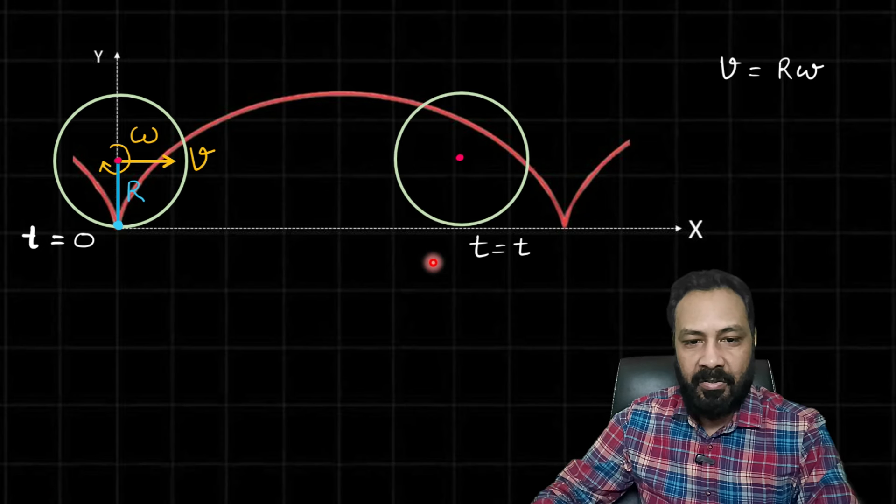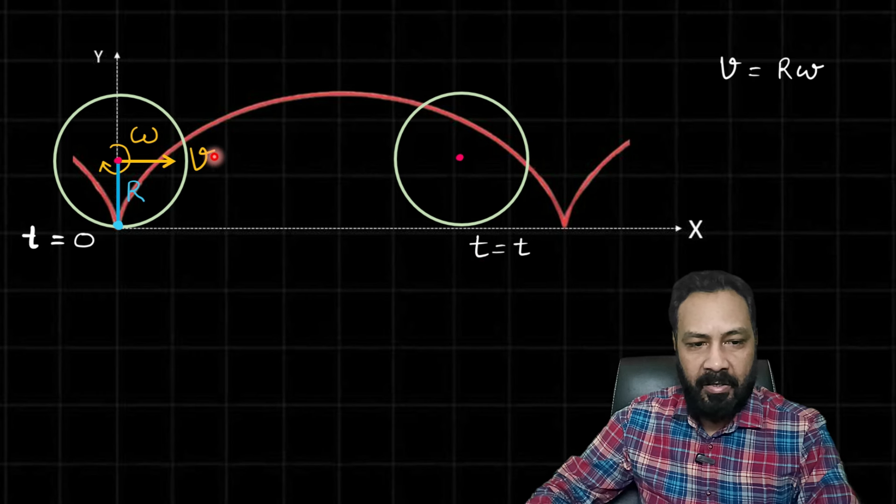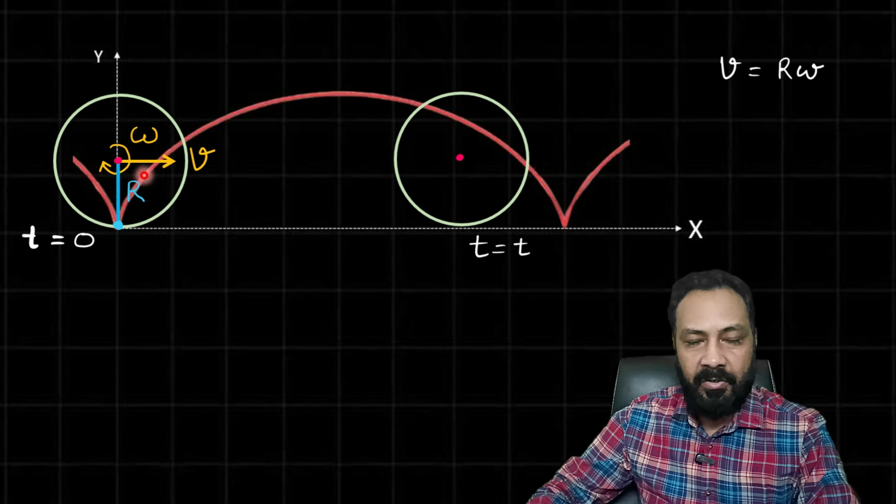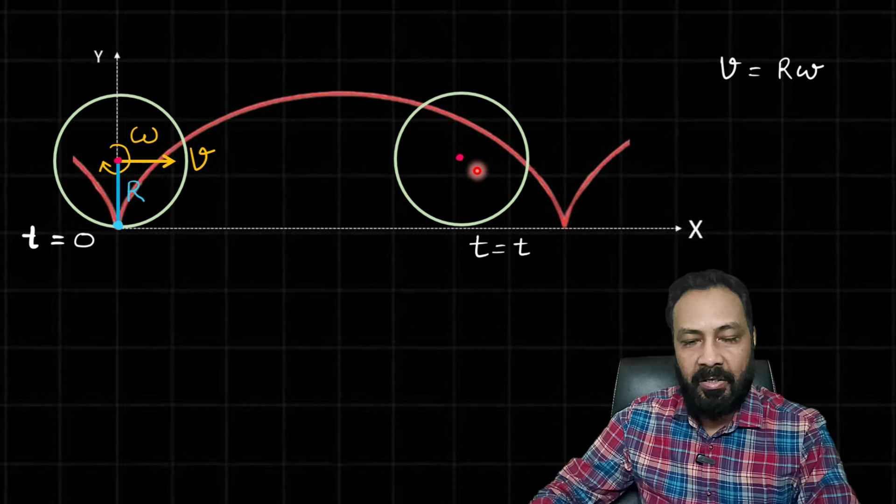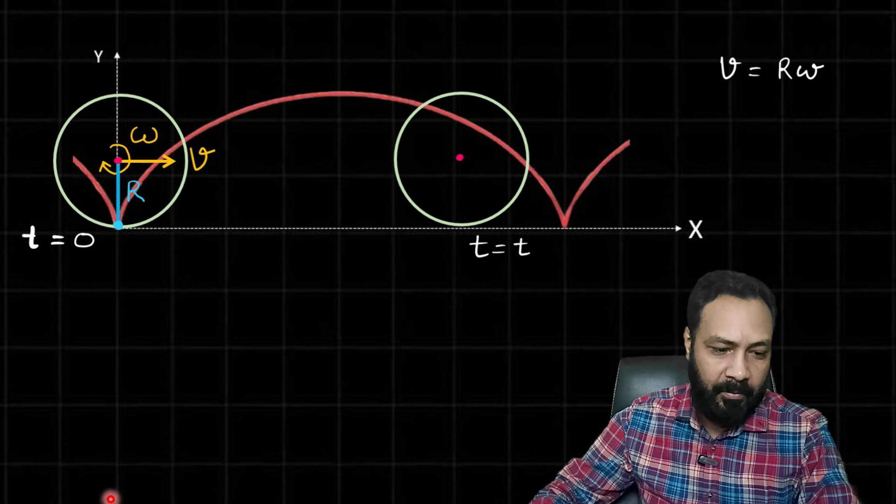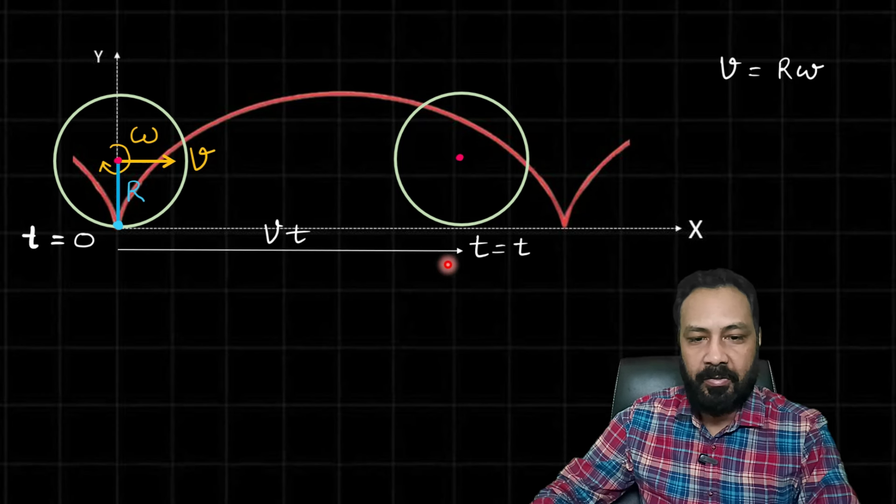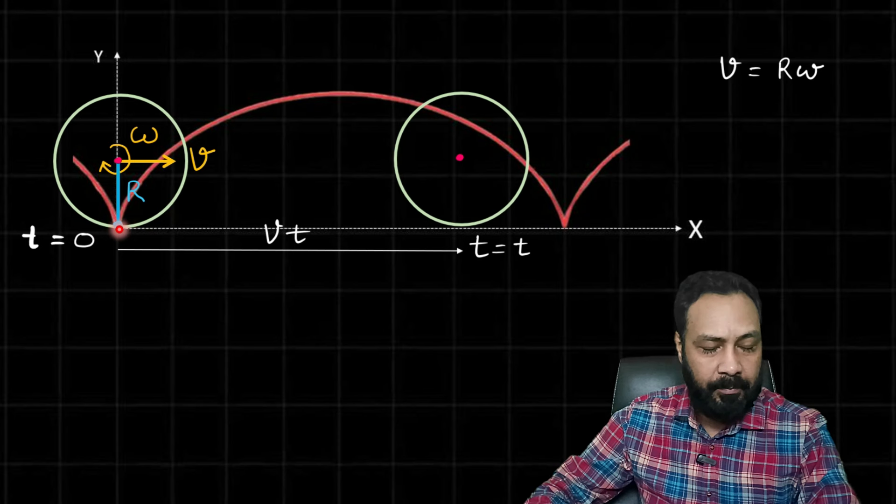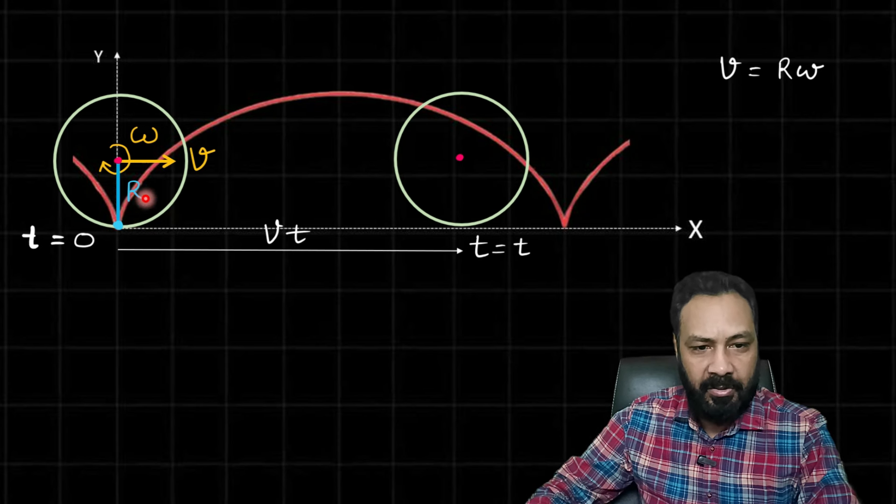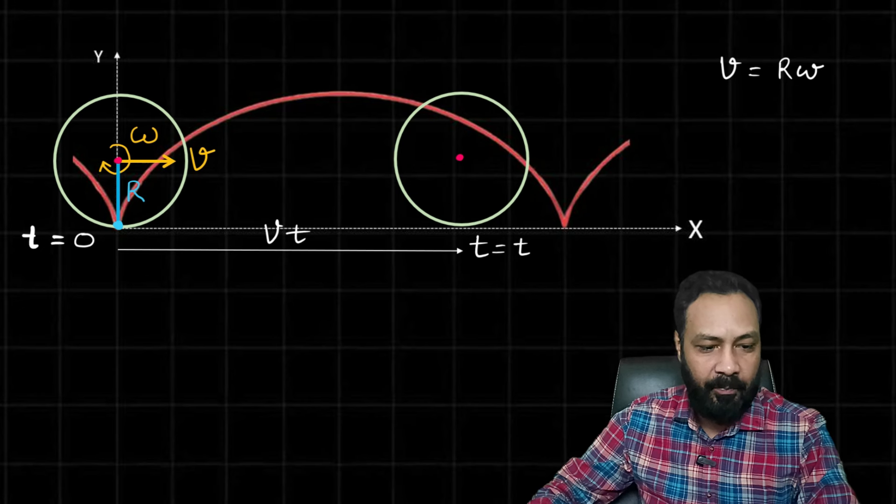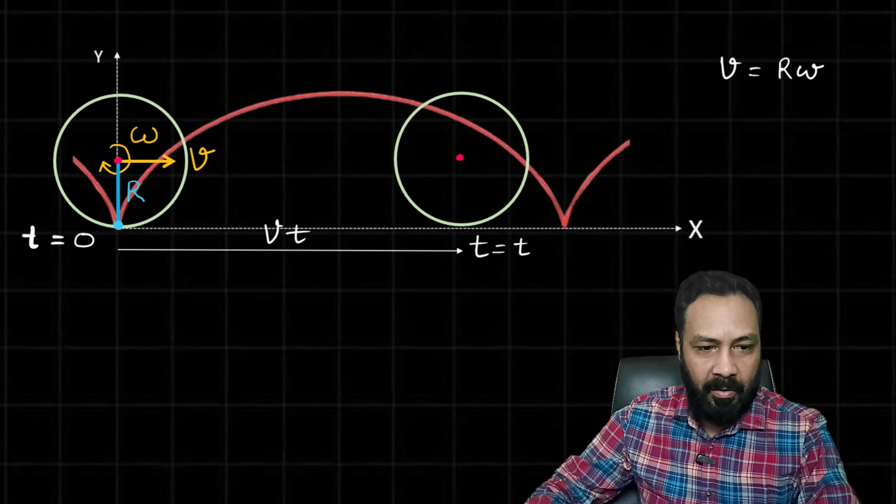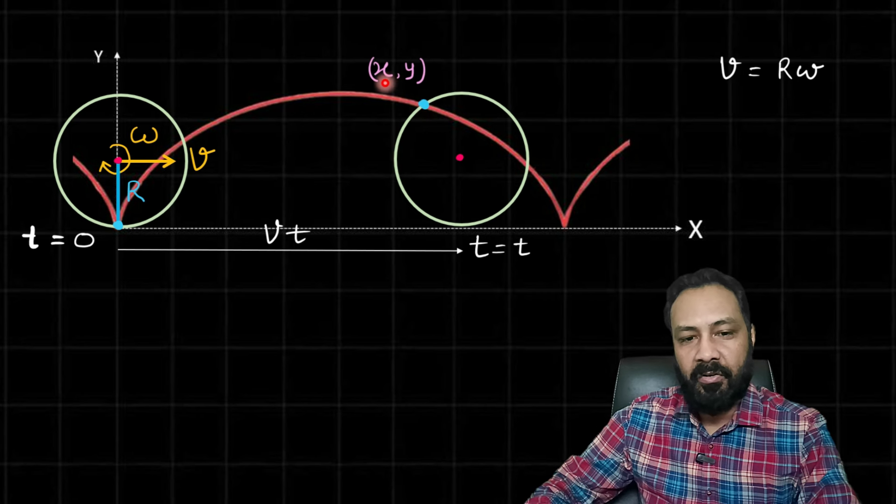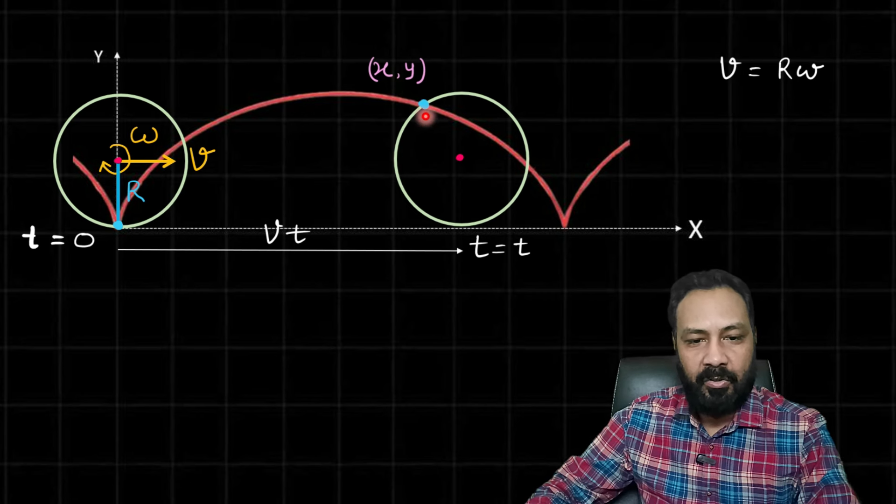Now at a later moment, say time t, the center has translated up to here. Because it is moving with uniform velocity v, in time interval t it will traverse a distance vt. Now with the wheel, this point of the circumference whose trajectory equation we have to find has come up to this point. Let's assume that its coordinates are x, y at time t.